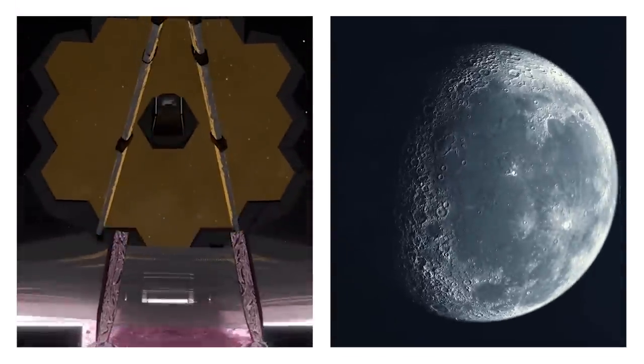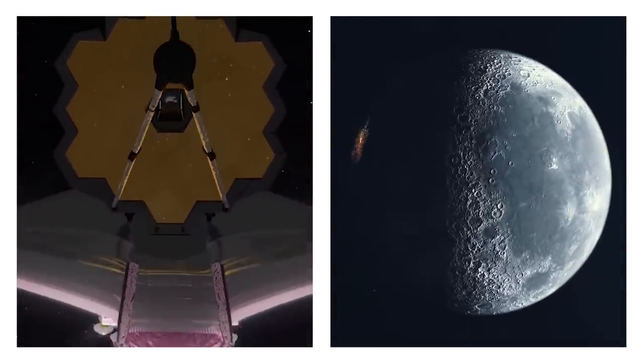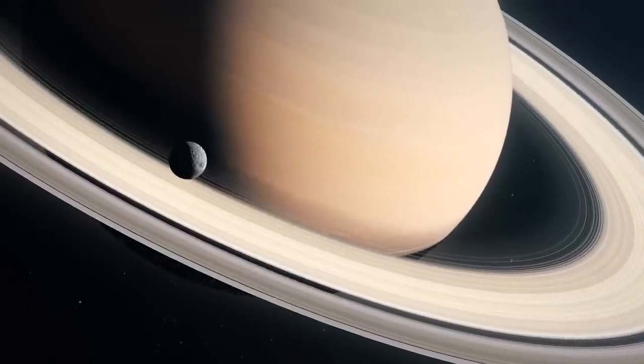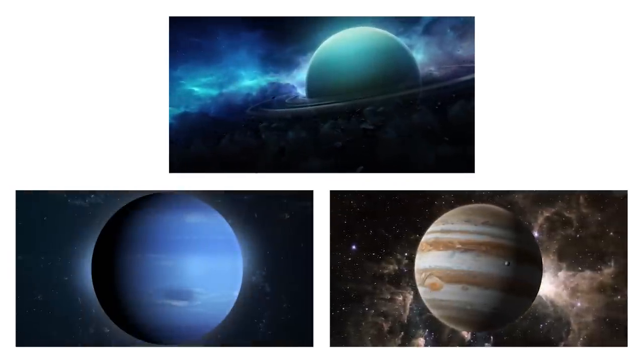Imagine spotting a bumblebee's heat from the moon's distance, a cool feat. While Saturn's rings are well known, Uranus, Neptune, and Jupiter have hidden ones.